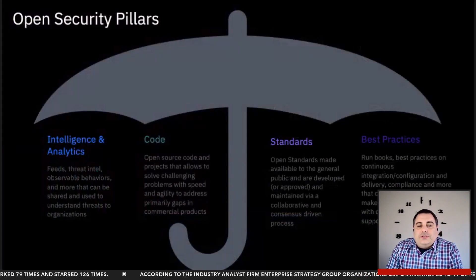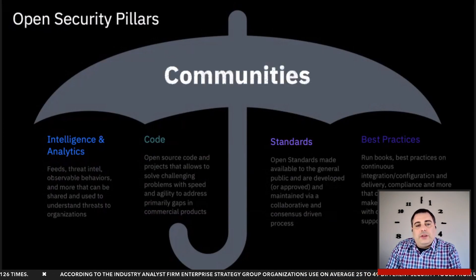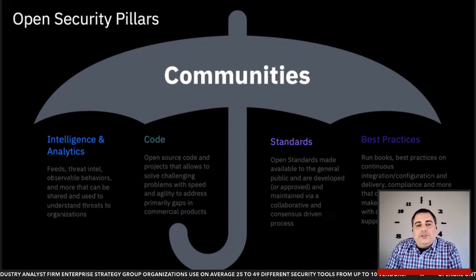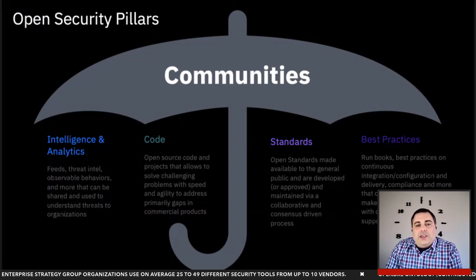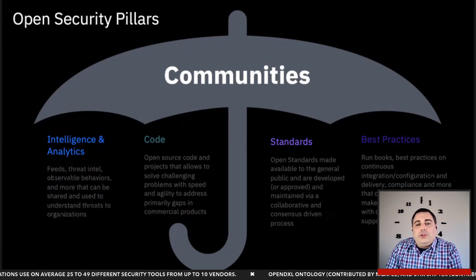As we wrap up this section, let's step back for a moment to think about what is the common thread of all of these different pillars of open security. Community. Communities combined with the previously discussed efforts are what create the competitive advantage for open security — otherwise known as the power of the crowd. Community is the underlying fabric of it all. As an industry, we have to learn how to lean into and embrace these community-driven models of standards, code, intelligence, analytics, and best practice. Only then will we be able to keep pace with and hopefully get ahead of emerging threats.